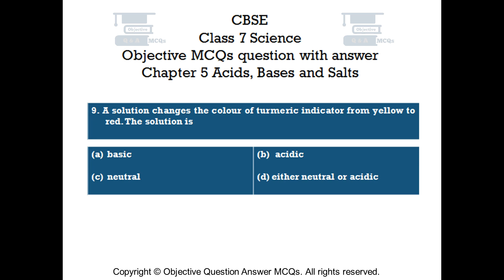Question number 9. A solution changes the color of turmeric indicator from yellow to red. The solution is: Option A, basic. Option B, acidic. Option C, neutral. Option D, either neutral or acidic.